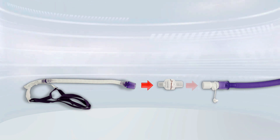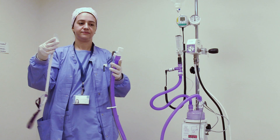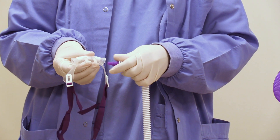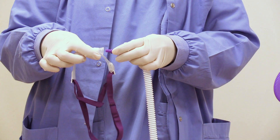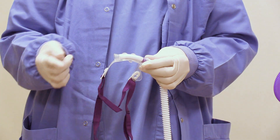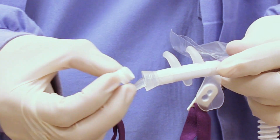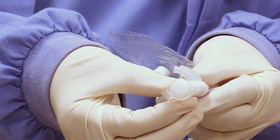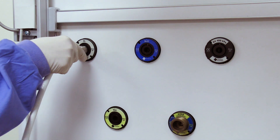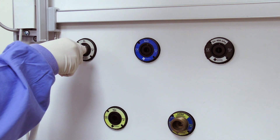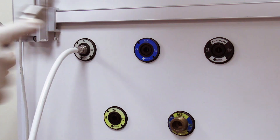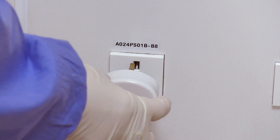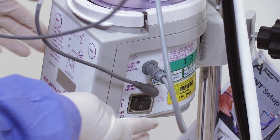Now connect the nasal cannula to the filter and then to the breathing tube. Some nasal cannulas allow fixing the tube on either side, so simply insert the tubing into the side that is comfortable and close the open end with the white cap provided. Connect the oxygen tubing to the pipeline supply — the machine will sound an alarm which will stop once you connect the tubing to the air pipeline supply. Then connect the power supply and switch on the machine.